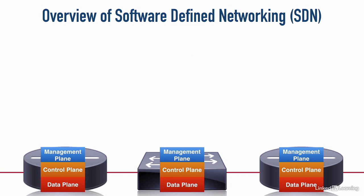The way they make that decision is based on an algorithm running at the control plane. For example, a router is maybe using OSPF as its routing protocol, and OSPF runs the Dijkstra algorithm. That algorithm is running at the control plane. On a switch, we might be running the spanning tree protocol algorithm. This is where the number crunching goes on, where the decisions are made, and this is what populates our MAC address table and our routing table.